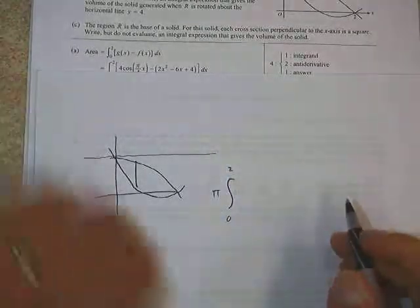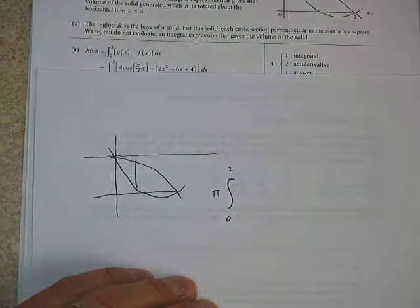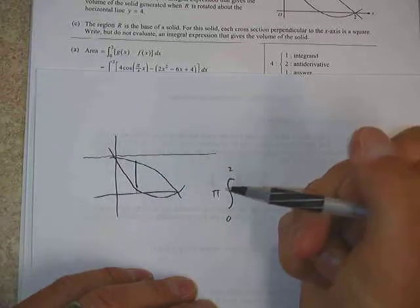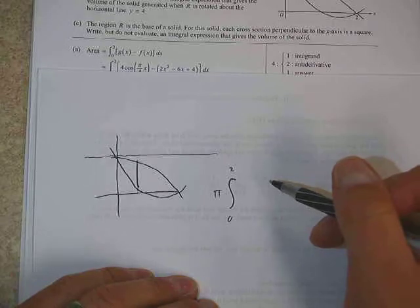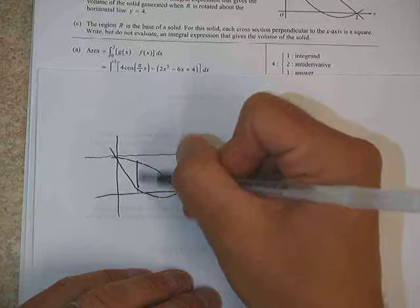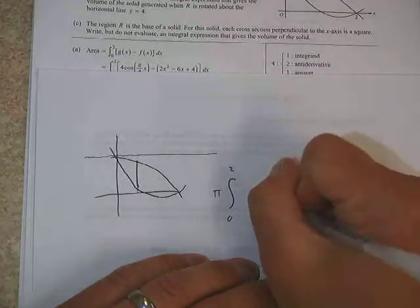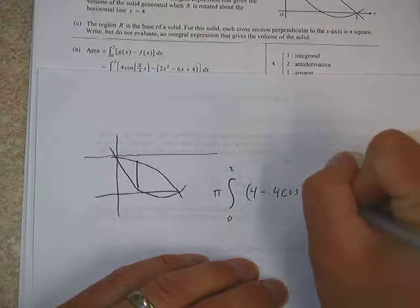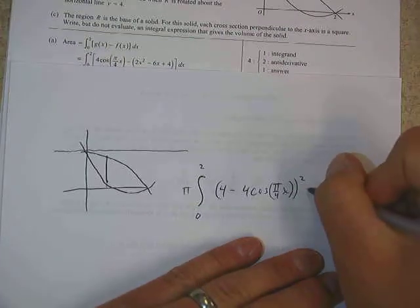0 to 2 again, pi out front. The distance between the outside radius and the revolving line is going to be, remember this part right here would be the bottom function. Whether it's in this part or this part, it doesn't really matter whether it's above or below the x-axis. And then the 4 minus that would give us the distance from the 4 line to the bottom of that region. So if we do 4 minus, and then we do 4 cosine of pi over 4x, squared.